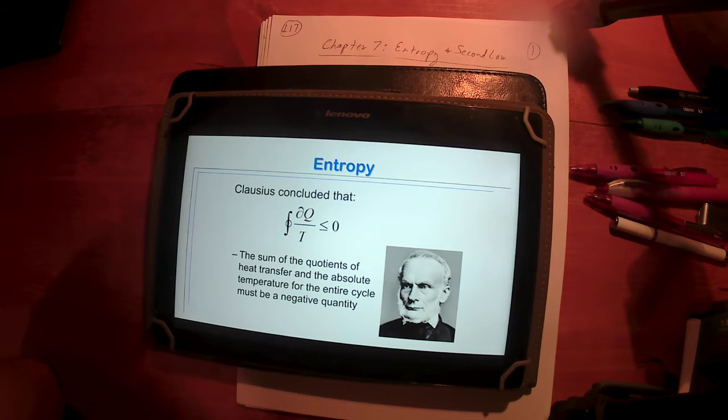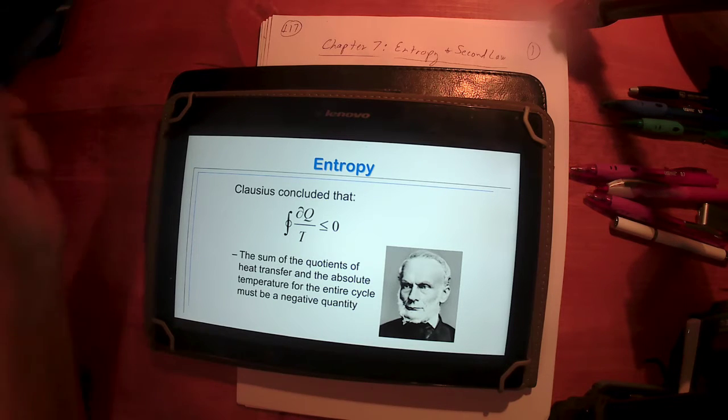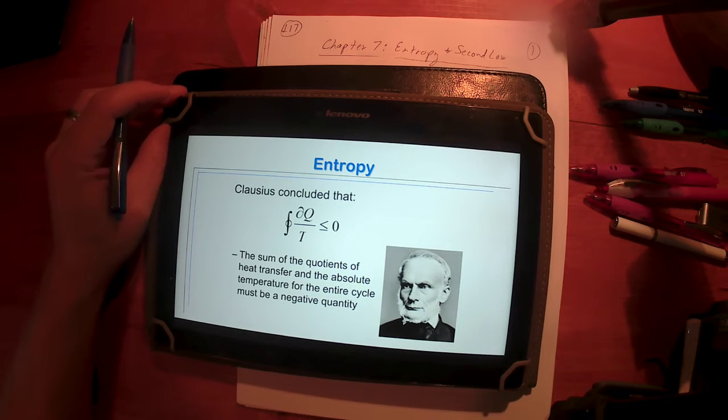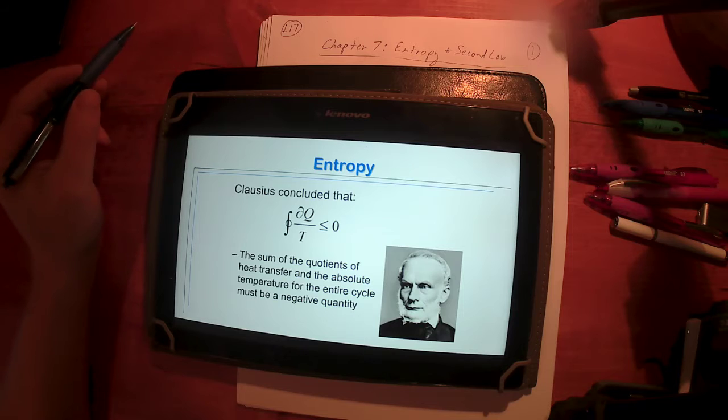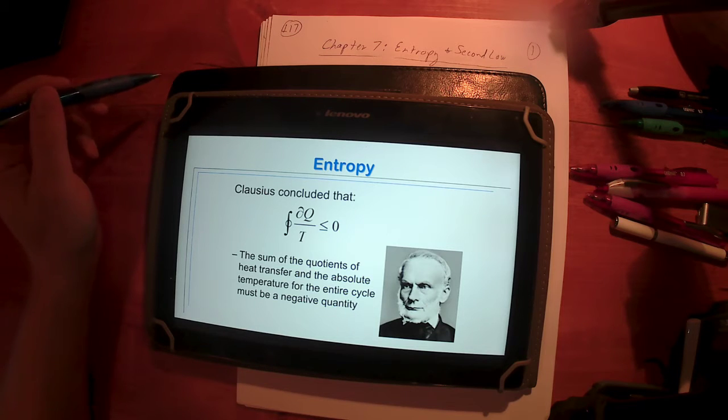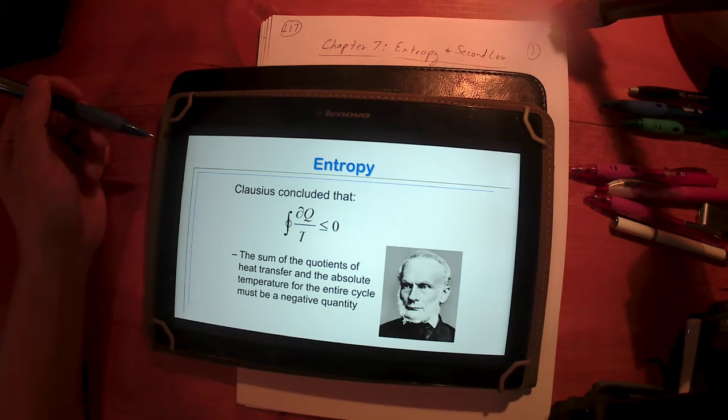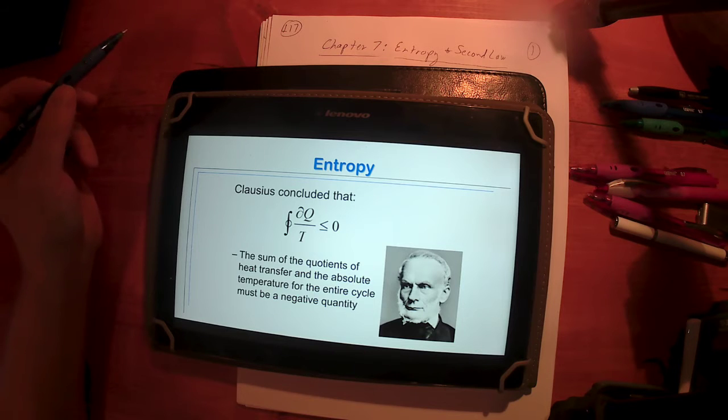But, we've got work by people like Clausius. Remember, we had the Clausius statement in Chapter 6, and we also had the Kelvin Planck statement. So, we've got work of many engineers and physicists in this time frame, trying to figure out why is this the case. Well, Clausius comes to a conclusion about a cycle, a cyclic device, where I add heat or remove heat, and if I track that amount of heat divided by the temperature at which that heat occurs, I get a negative quantity.